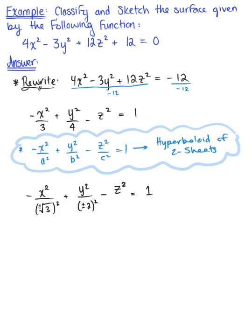Now looking at these variables, we want to determine which axis is the surface centered about. So looking at this, we see that the only variable with a positive coefficient is y. So we can say that this surface, our classification of the quadratic surface, is a hyperboloid of two sheets centered about the y-axis.